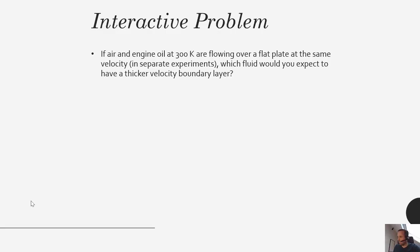This is an interactive or thought problem. I just want you to think this through a little bit. If air and engine oil, each at 300 Kelvin, are flowing over a flat plate at the same velocity in separate experiments, which fluid would you expect to have a thicker velocity boundary layer?